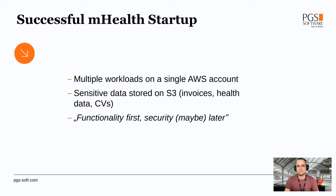Let's start with a startup scenario. It's a QA expert — they have multiple workloads on a single AWS account, and they store sensitive data on S3: different types of data, sometimes invoices, sometimes health data. The HR department also stores CVs on S3 in different buckets. The company idea was functionality first, security maybe later — not a very good idea and definitely not a good practice, but let's help them now.